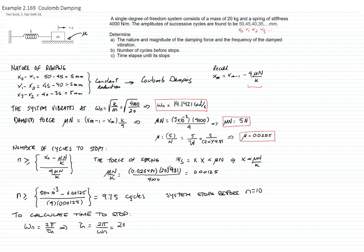2 pi, and we calculate the omega n, which is 14.42. And that gives me that each cycle is completed in 0.444 seconds.